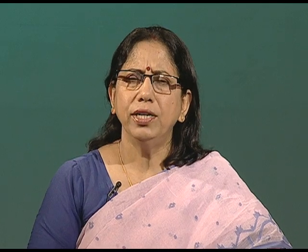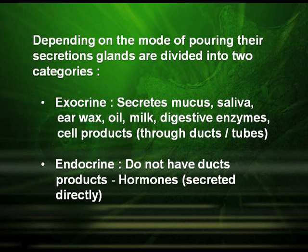Columnar and cuboidal cells get specialized and act as glandular epithelium, which may be unicellular or multicellular. Depending on the mode of pouring their secretions, they are divided into two categories: exocrine glands, which secrete mucus, saliva, and earwax through ducts; and endocrine glands, which do not have ducts — their products are called hormones and are directly secreted into the bloodstream.